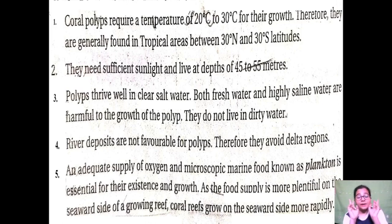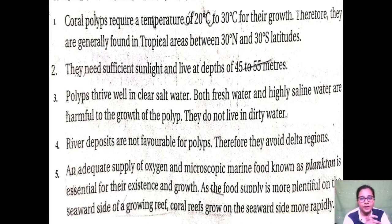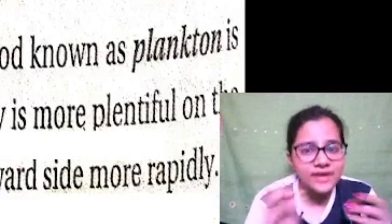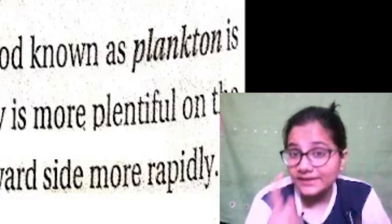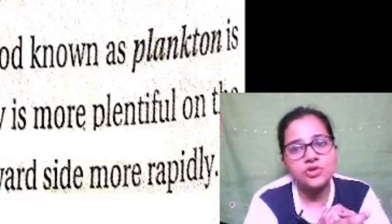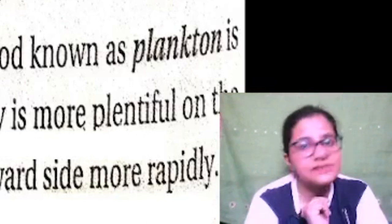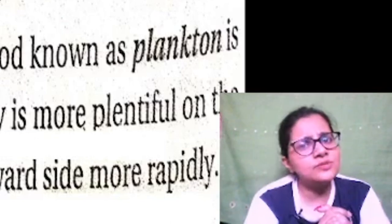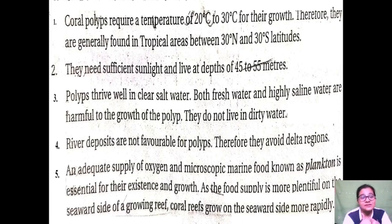Third: polyps thrive well in clear salt water — neither too low in salt content like glaciated water, nor too much salt content as found in a delta region. Glacial water has very low mineral nutrients and low temperature, which polyps cannot sustain. The polyps also cannot grow in areas with too much sediment like a lagoon or delta region. In the delta, the river meets the ocean and deposits sediments along with too much salt, which is not conducive for coral formation.